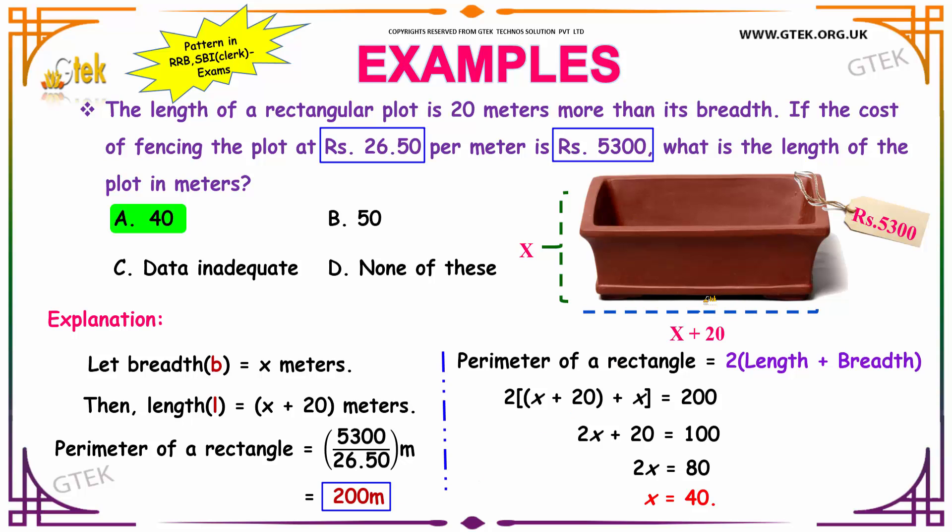That is the perimeter of the rectangle. Perimeter of a rectangle can be found using the formula 2(l + b), that is 2 times length plus breadth. Your length is x plus 20 and your breadth is x. Substitute it, and your perimeter is found out to be 200.